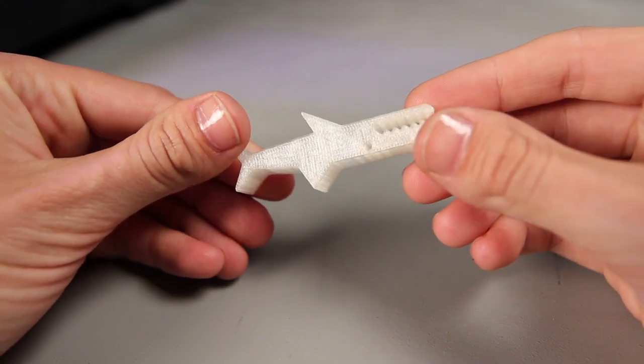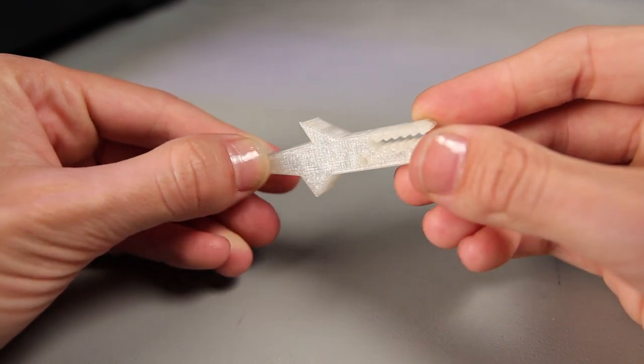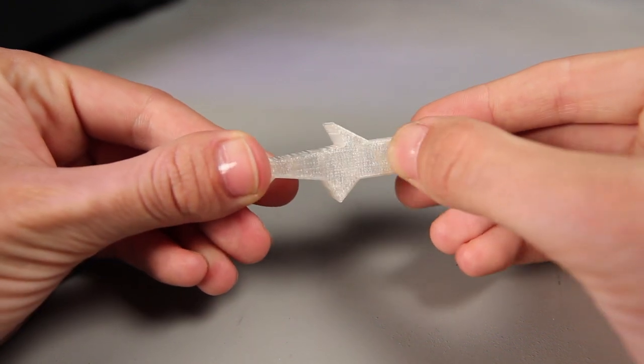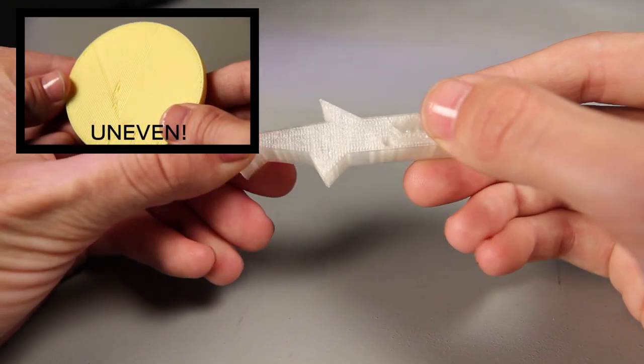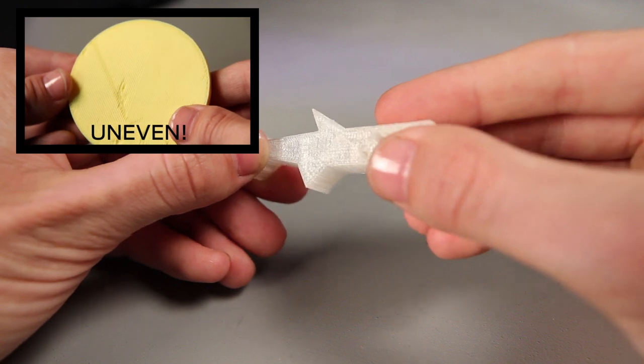Now take a look at the bottom of your thing. The bottom surface should be completely smooth all the way across. If it looks uneven, your platform is probably higher on one side than the other.